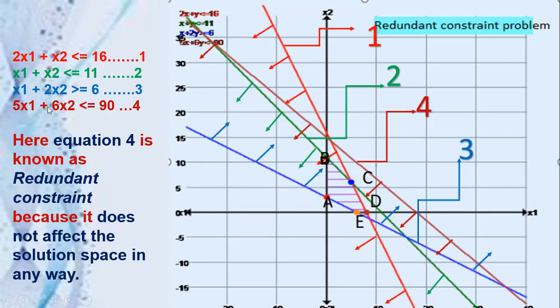The fourth constraint is 5x1 plus 6x2 less than or equal to 90. Take any point below that line, say (0,0): 0 is less than 90. It satisfies the condition, so the arrow mark should be towards the origin.